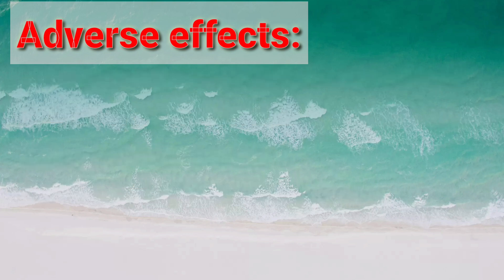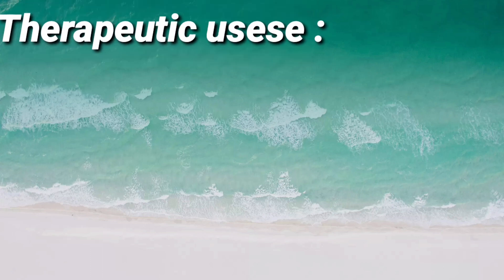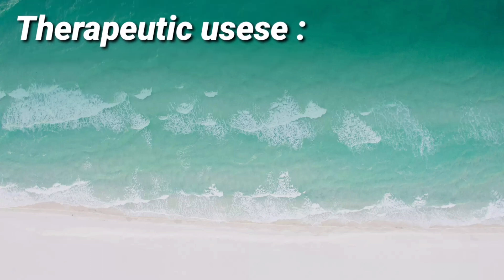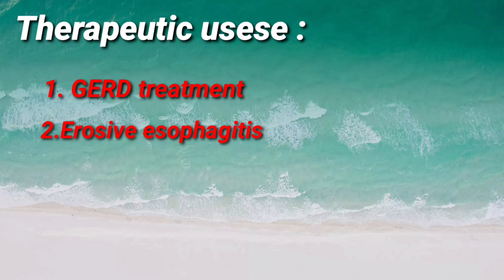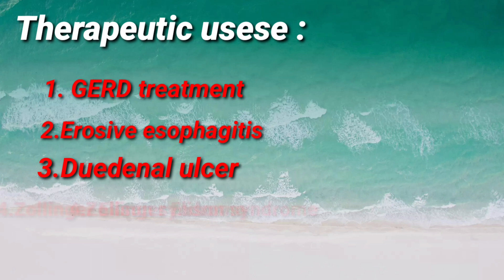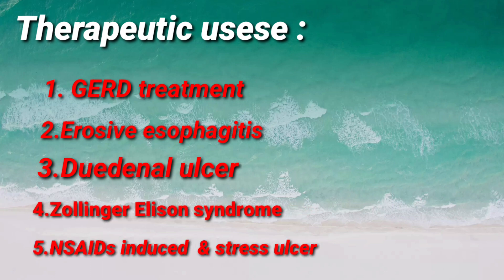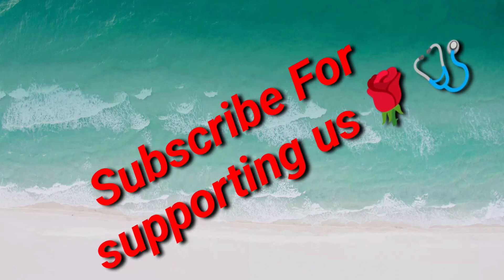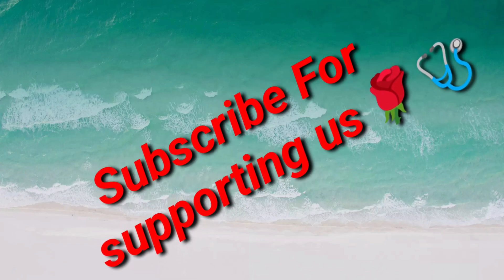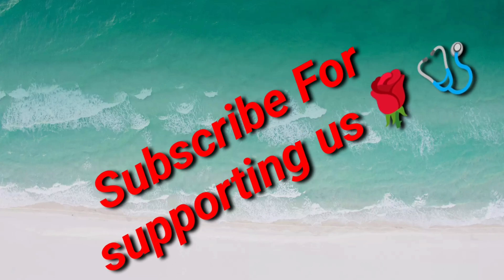What are the therapeutic uses of these drugs? They are used for multiple diseases: first, GERD — gastroesophageal reflux disease; second, erosive esophagitis; third, duodenal ulcer; and in hypersecretory pathologic conditions such as Zollinger-Ellison syndrome. They are also used for stress ulcers. That was all about proton pump inhibitors — for more videos, please subscribe.